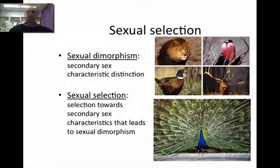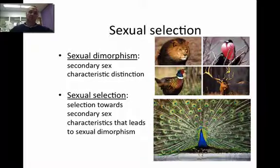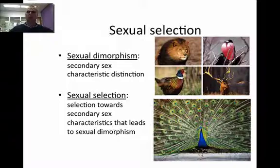The last thing is sexual selection. There's sexual dimorphism, which means there's a difference between sexes — males and females are different, especially in the animal kingdom. Oftentimes the males are the brighter colored ones because they have to attract females, and if they can attract the female, they're able to procreate. I hope this helps you a little bit on evolution and populations, and I will talk to you soon.